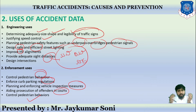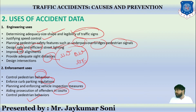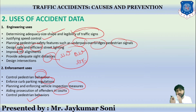Enforcement uses include controlling pedestrian behavior, enforcing parking regulations, planning vehicle inspection measures, and aiding prosecution — providing legal support to bring guilty persons to court so they are penalized and punished. Enforcement also means controlling pedestrian behavior through signboards indicating where people should and should not walk, and providing dedicated side tracks for pedestrians.